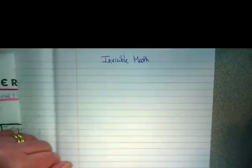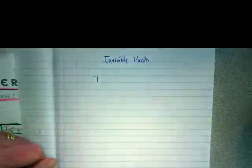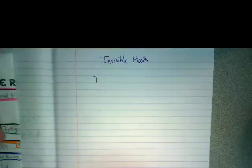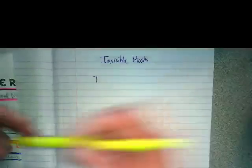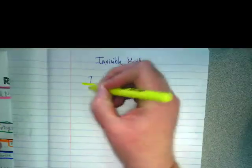Okay, we have a lot of invisible ones in math. I want you guys to write the number seven. Who knows where the invisible one is? It's underneath it. Seven over one, and I want you to use your highlighters for the invisibles.